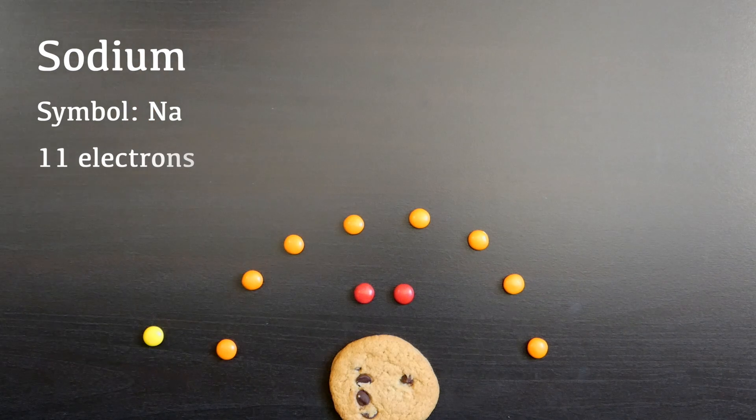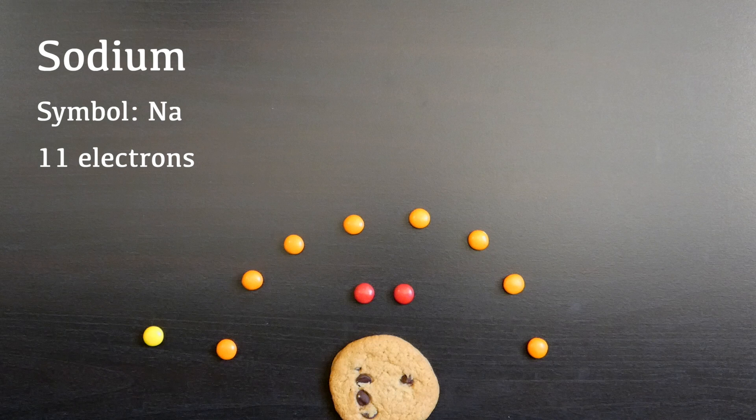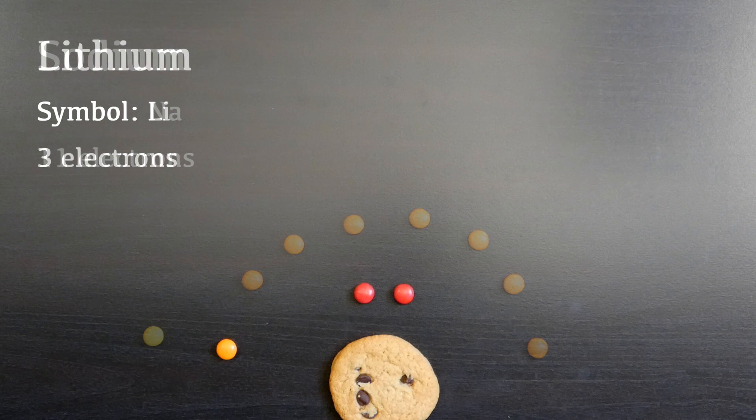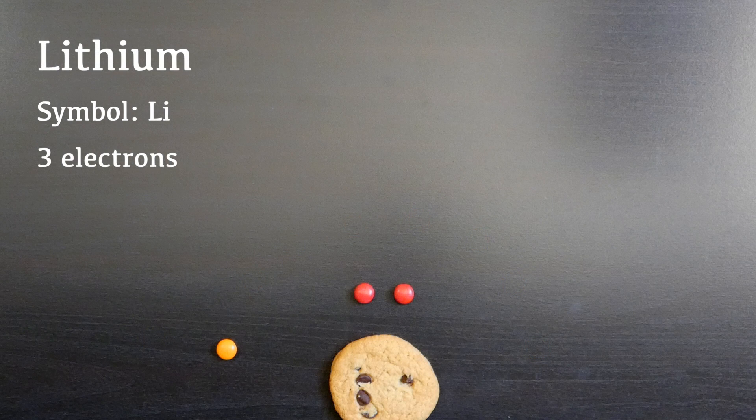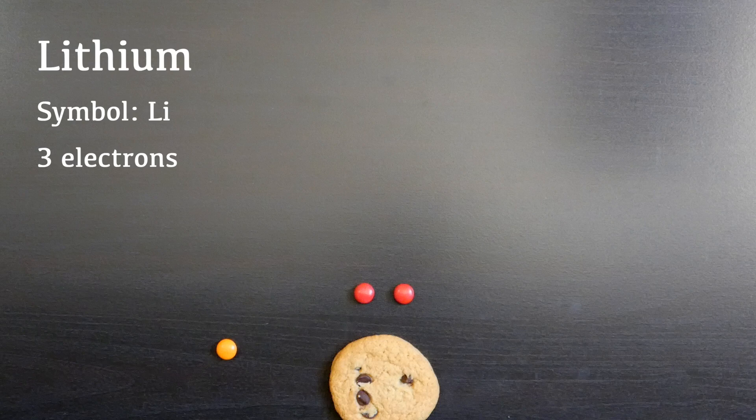Let's see how this works with the eleventh element, sodium. A sodium atom holds just one electron in its outer shell, so it can lose that one electron to become stable. This is the same pattern we saw in lithium, which sits directly above sodium on the periodic table.